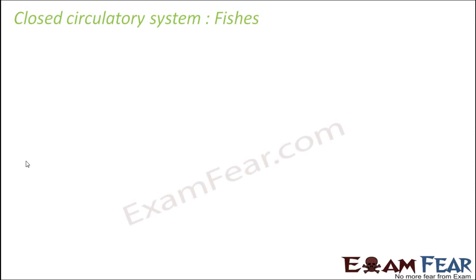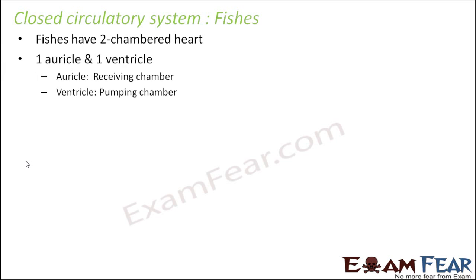We will talk about the circulatory system of fishes. Fishes have a two-chambered heart. Even though the circulatory system is closed in different animals, the structure of the heart also plays an important role. The heart in different animals is quite different. The fish heart has two chambers: one auricle and one ventricle. Auricles are the receiving chambers of the heart and ventricles are the pumping chambers.